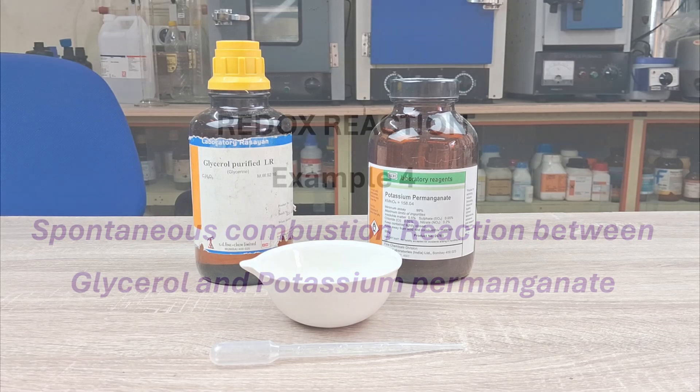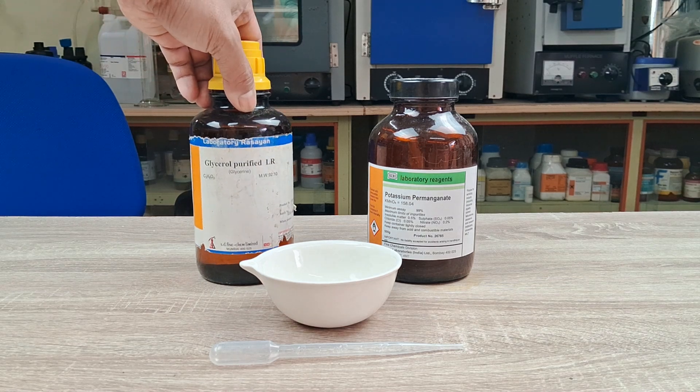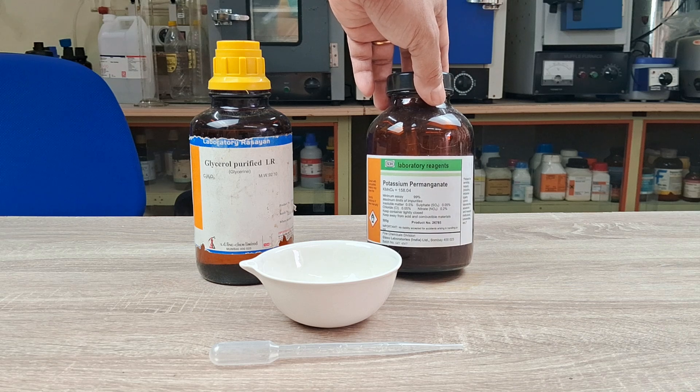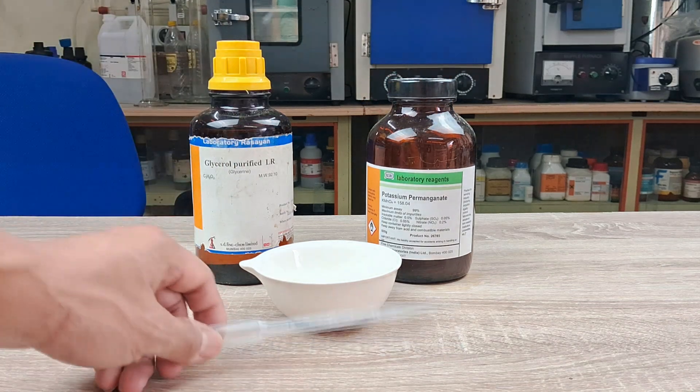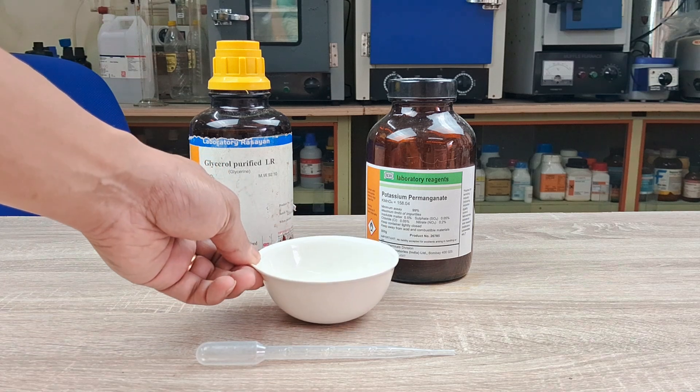To perform this experiment, you will need the following: glycerol or glycerin, potassium permanganate powder, dropper or pipette, and a piece of glazed porcelain tile or porcelain dish.